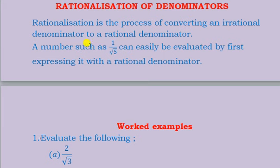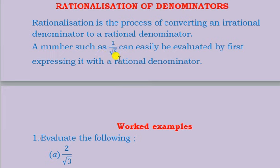Rationalization of denominators is the process of converting an irrational denominator to a rational denominator. For example, 1 over root 5 can be evaluated by first expressing it with a rational denominator. We multiply by root 5 over root 5 so we don't change the meaning of the expression. So we get root 5 over (root 5 times root 5), which gives root 5 over 5. Now the denominator is the rational number 5.